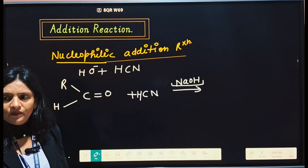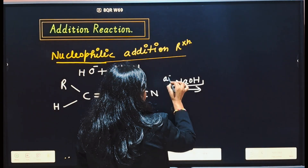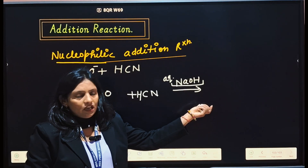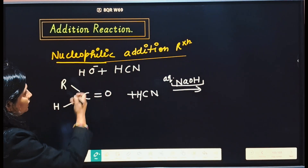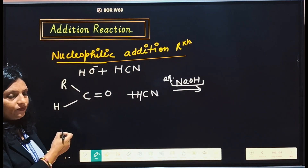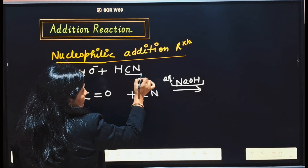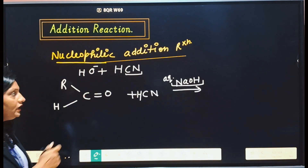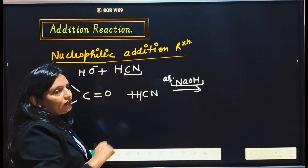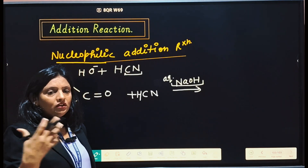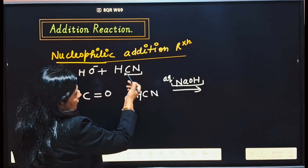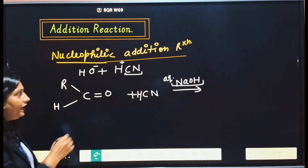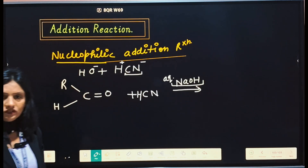In basic medium we can take KOH, in aqueous solution. In aqueous solution they can decompose into ions and give us OH negative. Then what will happen? This OH negative — here nitrogen is more negative as compared to carbon and hydrogen, so it will try to attract electrons towards itself.